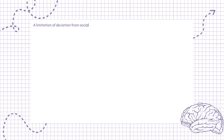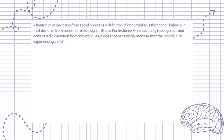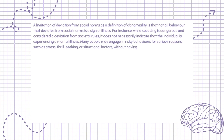A limitation of deviation from social norms as a definition of abnormality is that not all behavior that deviates from social norms is a sign of illness. For instance, while speeding is dangerous and considered a deviation from societal rules, it does not necessarily indicate that the individual is experiencing a mental illness. Many people may engage in risky behaviors for various reasons, such as stress, thrill-seeking, or situational factors, without having a psychological disorder.